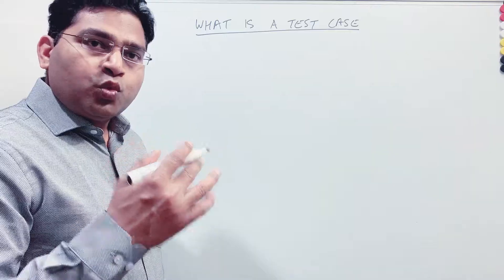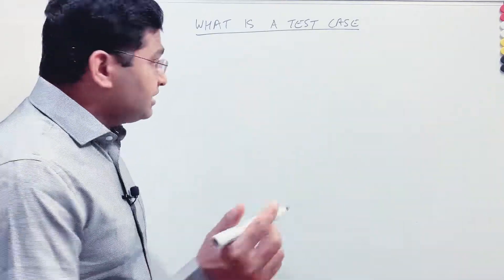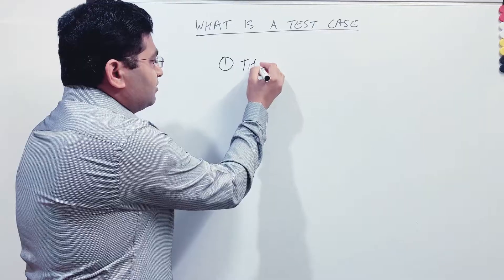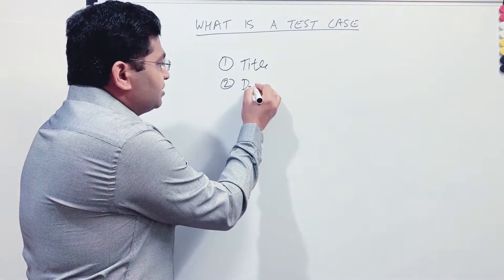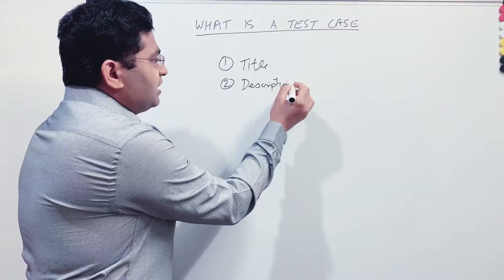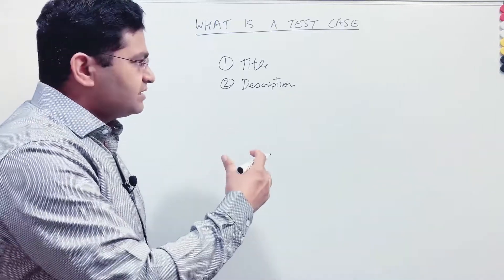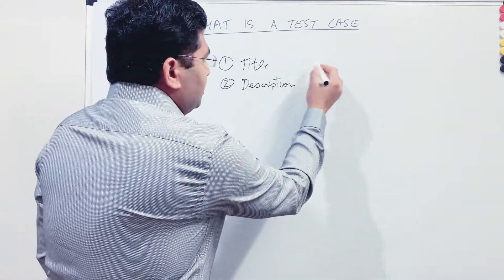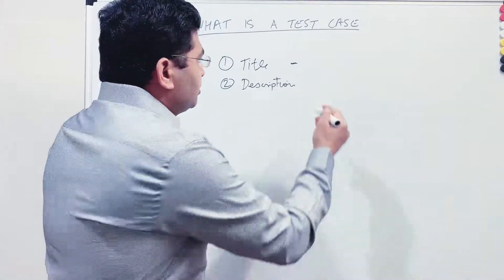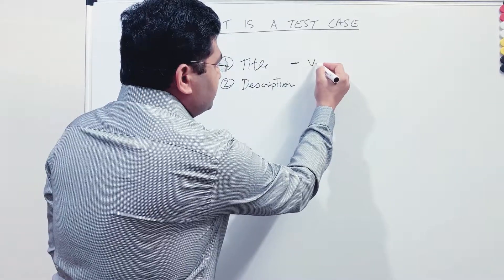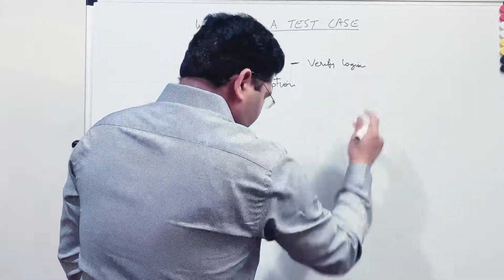I'll explain what all key sections are there within the test case. The first important thing the test case contains is the title. You write the title of the test case - what exactly you are trying to test. The second important thing is the description. Once you have the title, you write the description, detailing what exactly that particular test case is going to test in the application. For example, if I take an e-commerce website and we look at the login functionality, the title of the test case could be 'Verify successful login'.